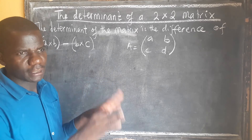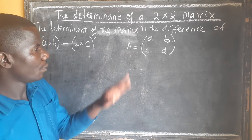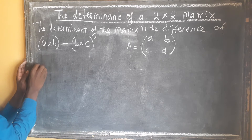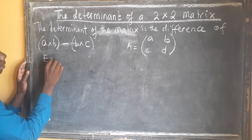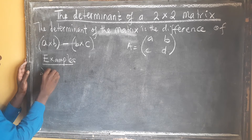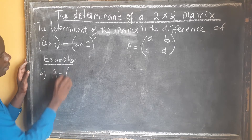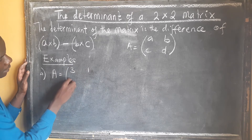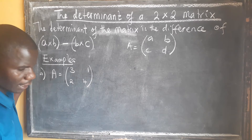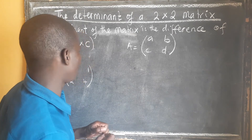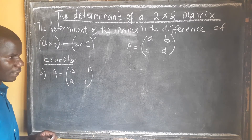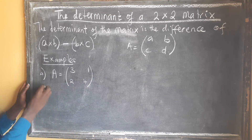Without wasting much time, let's look at the examples. Our first example: matrix A is equal to [[3, 1], [2, 4]]. Find the determinant of A. It can also be indicated as the determinant notation.